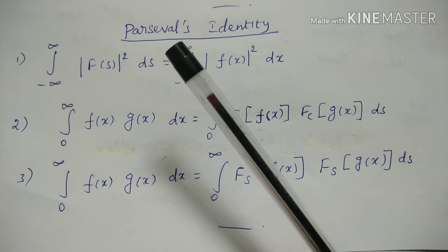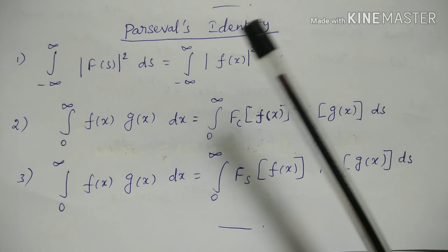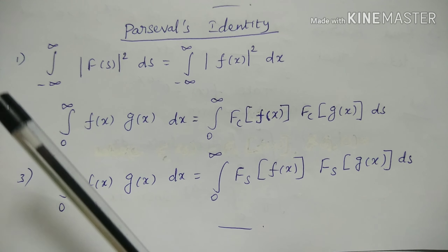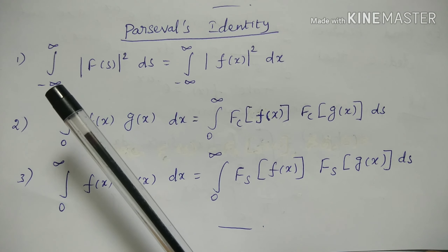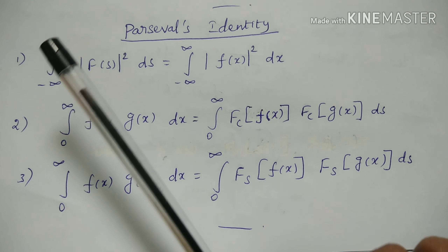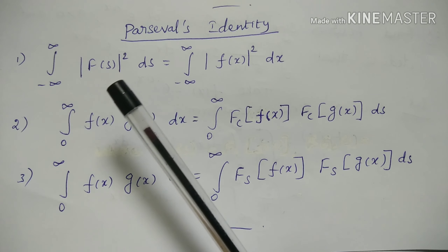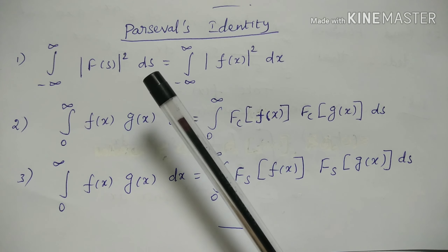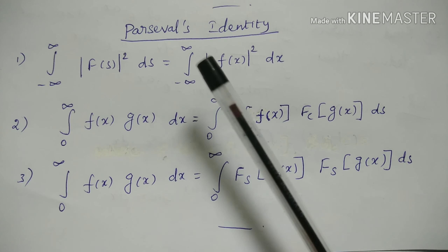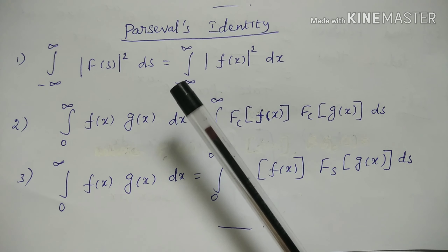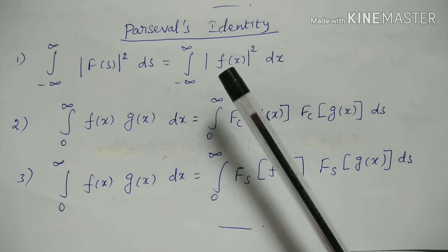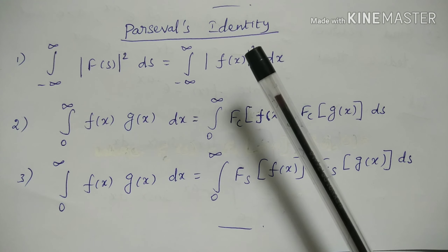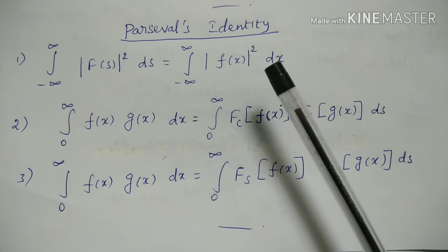Next, we will be talking about the topic: Parseval's identity formulas. First formula: integral from minus infinity to infinity of |F(s)|² ds equals integral from minus infinity to infinity of |f(x)|² dx.